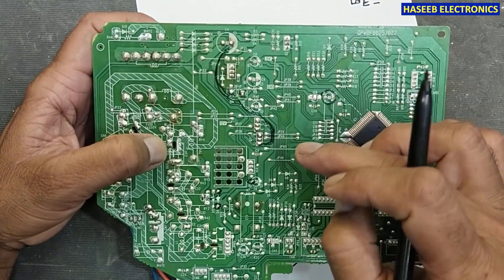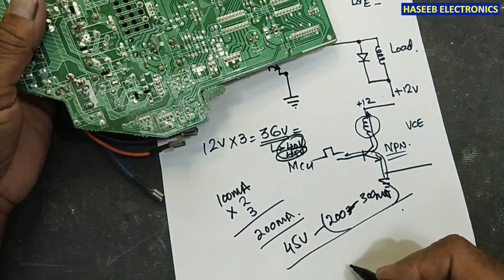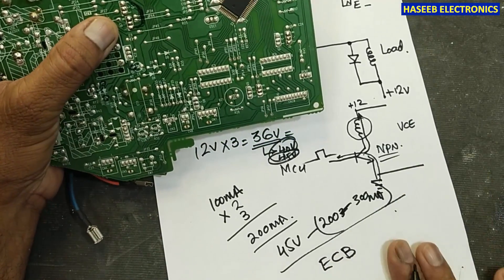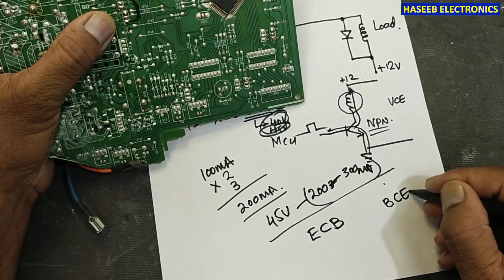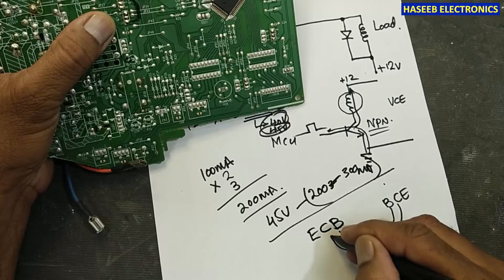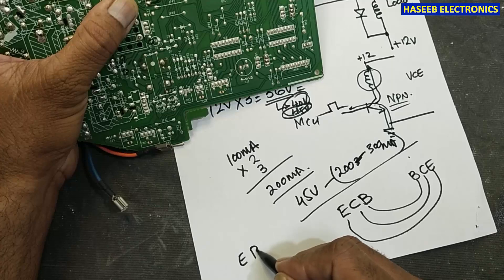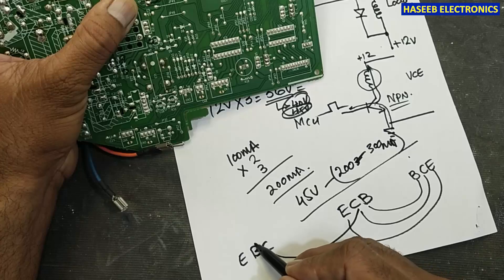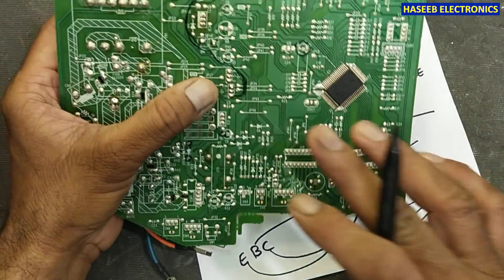Since the transistor is working as a switch, we select one with 45 volts VCE and 200 to 300 milliamperes with the correct emitter-collector-base connection. If the same footprint is available, use it directly. If we have a transistor with BCE pinout - base, collector, emitter - we rotate the transistor so base comes here, collector here, emitter here. If we have EBC - emitter, base, collector - we will connect collector here, base here, emitter here.